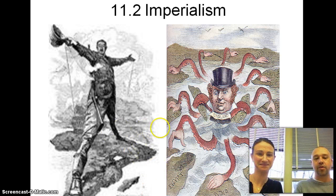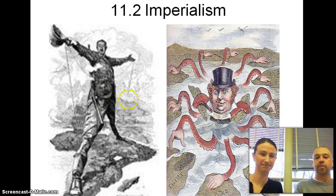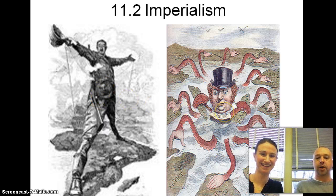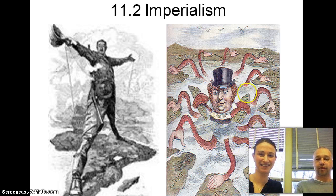That is Cecil Rhodes, the governor of South Africa, British leader, and this is the British version of Uncle Sam — this is John Bull, but in tentacle form.